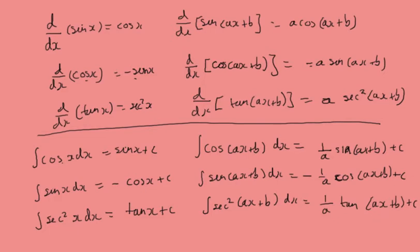Let's jump in and do some examples. Let's integrate sine 2x dx. That's just going to be minus 1 over 2, because there's our a, cosine 2x. And remember the constant of integration.